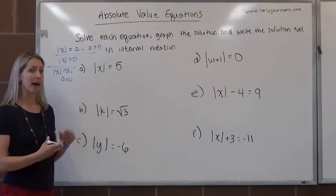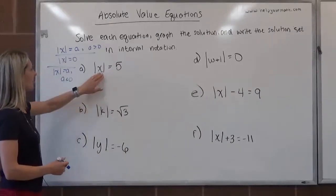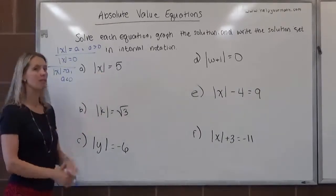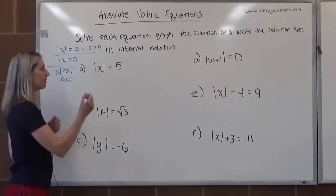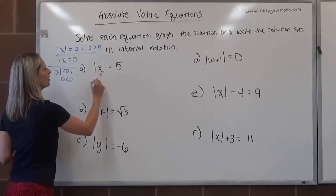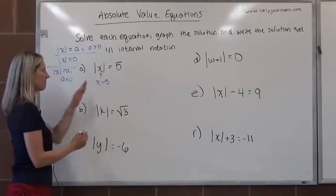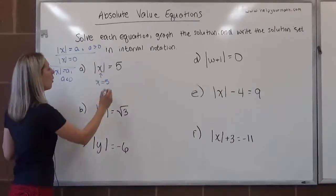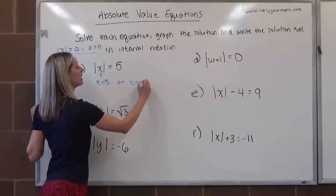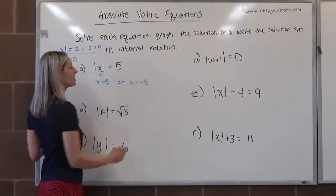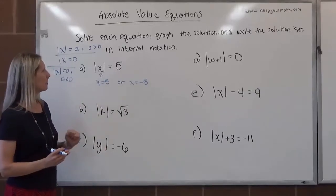The absolute value is already by itself. We're going to take the absolute value of this, and the result is 5. It's positive, so there are two cases to consider. The first case is that x equals 5, and that makes sense because the absolute value of 5 is 5. Or the second case is that what's inside the absolute value could equal negative 5. This is complete.